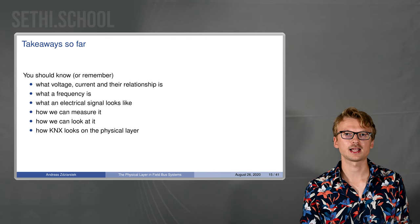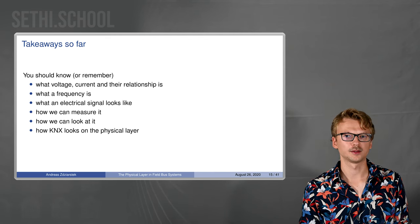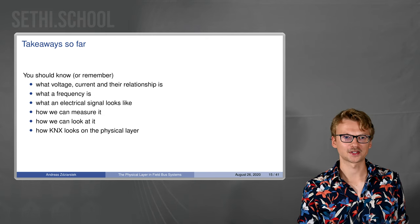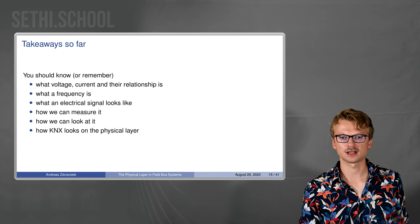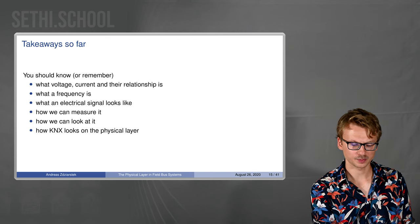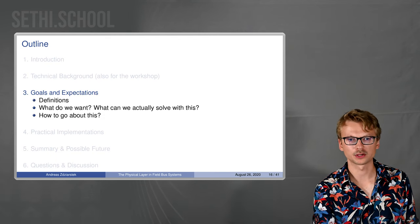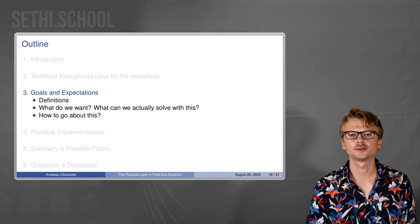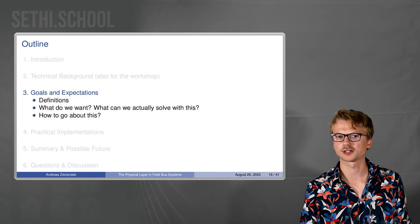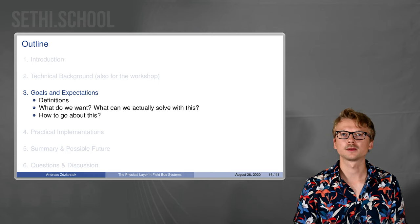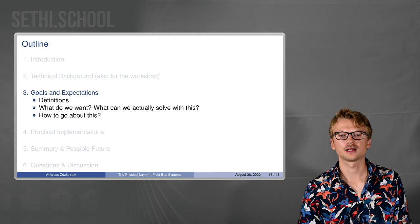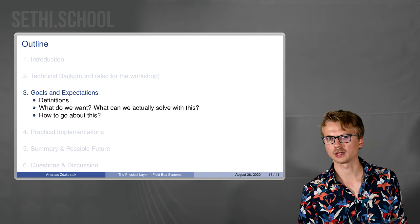Just a little summary slide of the introduction. Remember what voltage and current is, what a frequency is, also for the workshop, and we have seen what an electrical signal looks like, how we can measure it, how we can look at it and we have seen KNX. That's so far for the first part and now we are going into my research. First some definitions mostly about what physical layer security actually means and then some of our wishes and expectations and what it can actually deliver and then a general idea how to approach that problem.